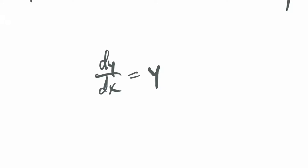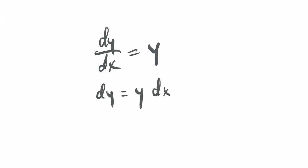Much like in Section 4.3 separation of variables, I need to get all my x's on one side and all my y's on the other. I'll think of dy/dx as the ratio of differentials, so I multiply dx on both sides to get dy = y dx, then divide both sides by y to get (1/y) dy = dx.